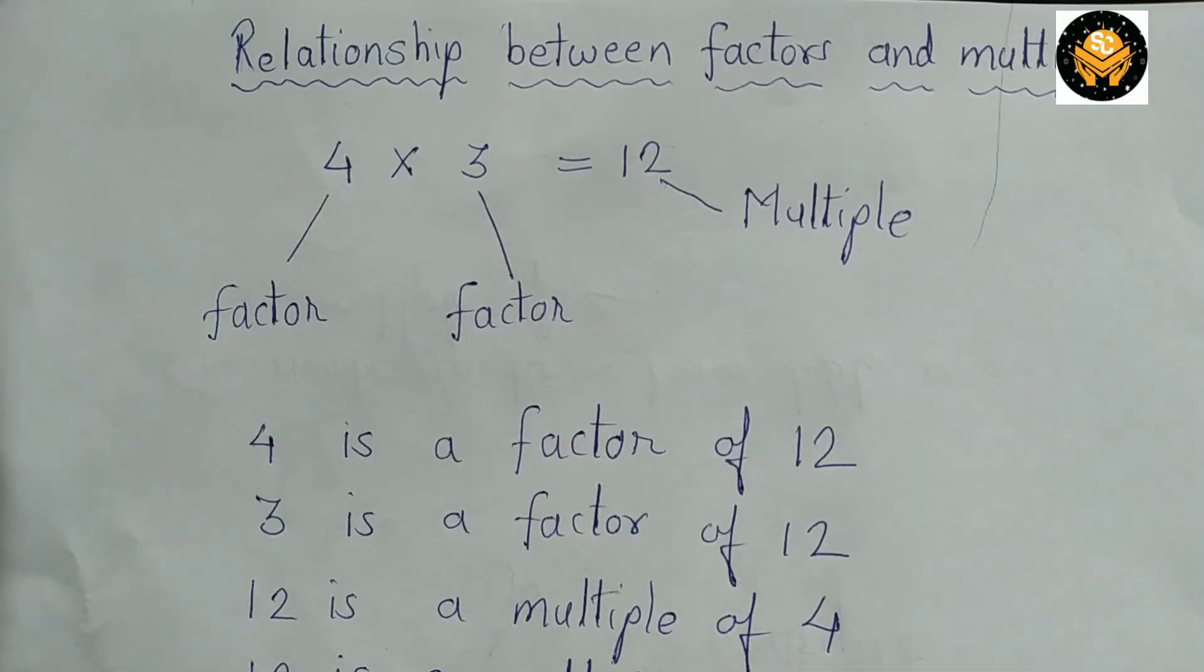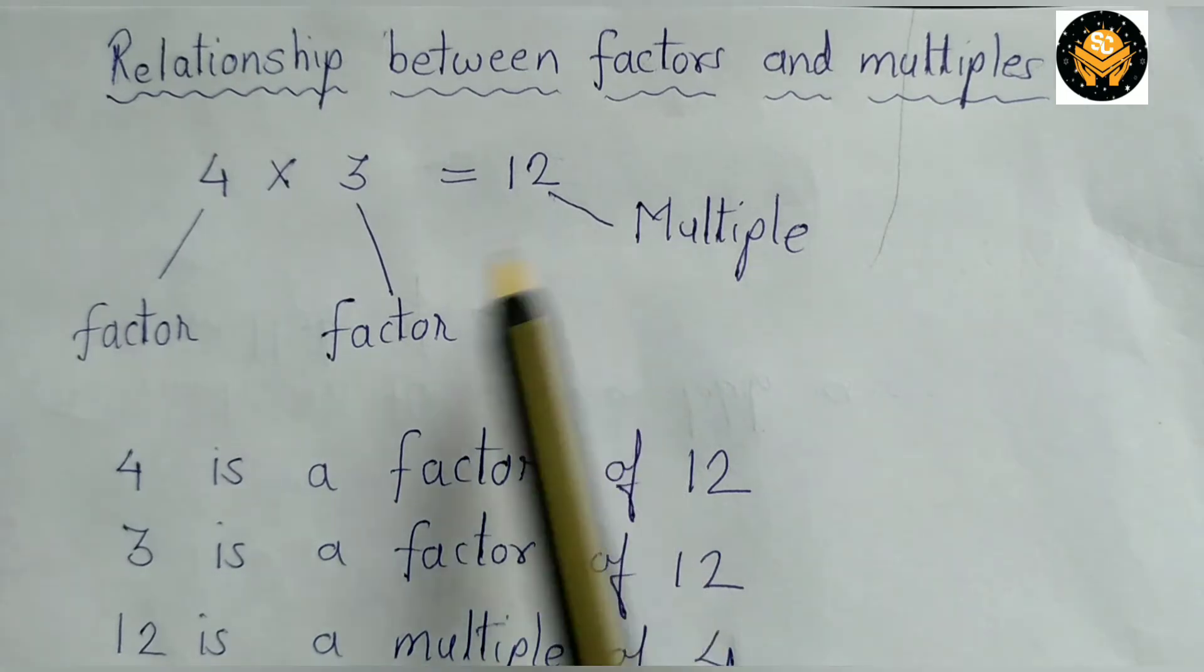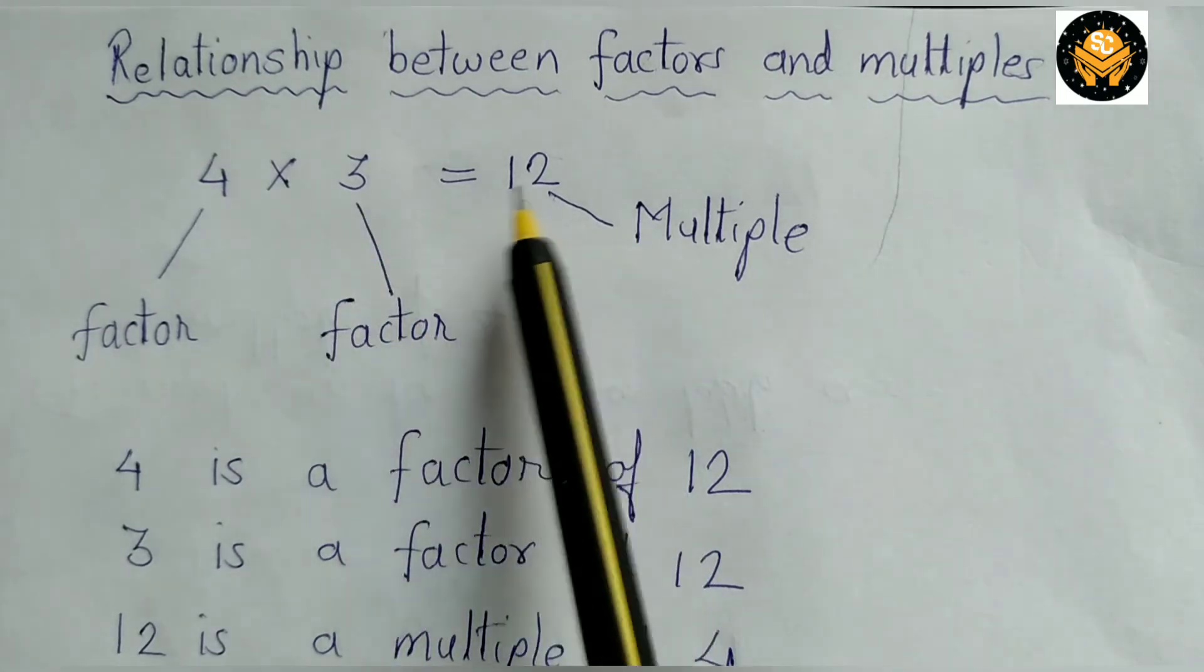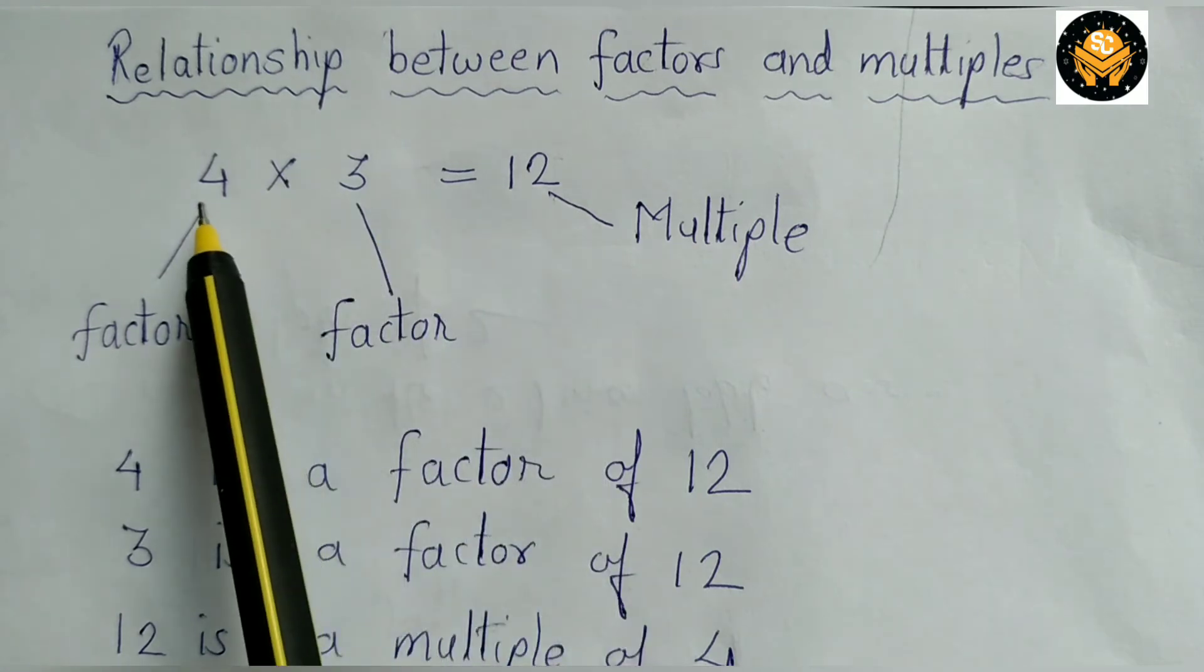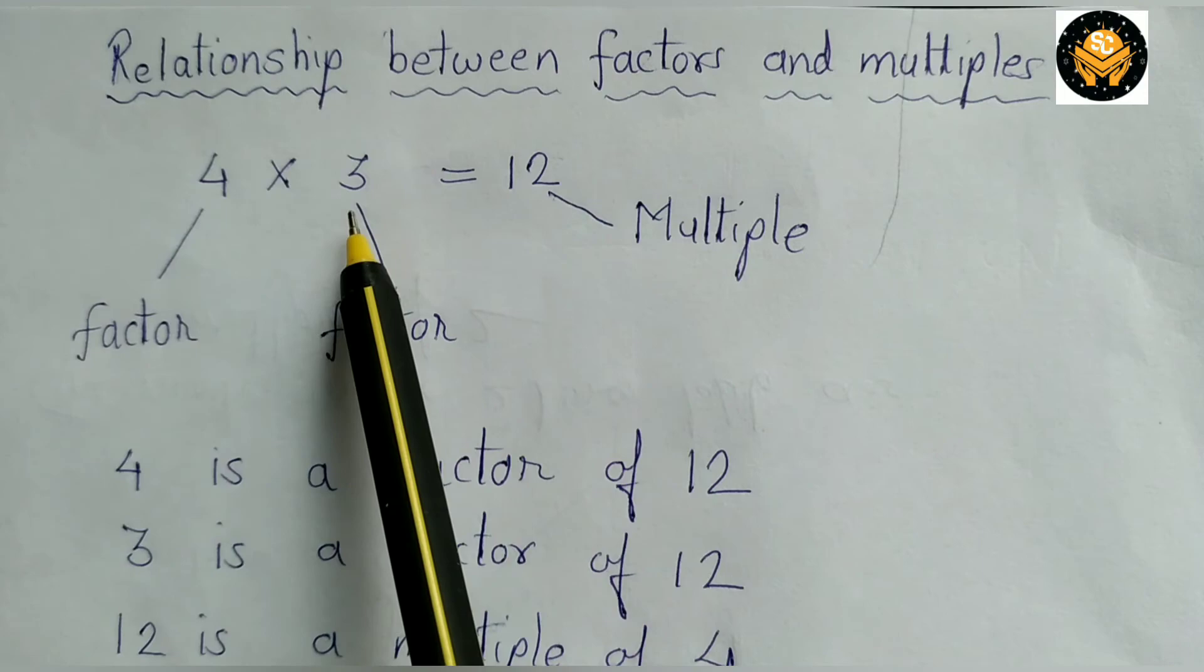Now let's see what is the relationship between factors and multiples. When we multiply 4 by 3 we get product 12. Here 4 is a factor of 12 and 3 is also a factor of 12 and 12 is a multiple of 4 and 12 is a multiple of 3.